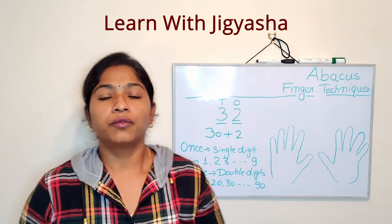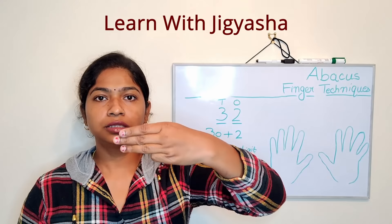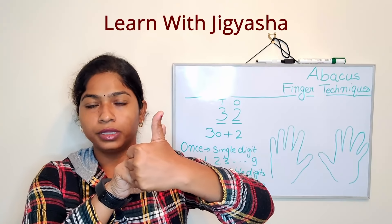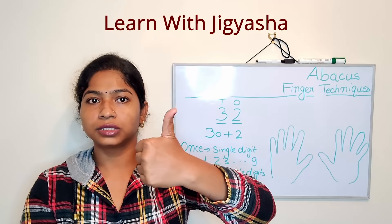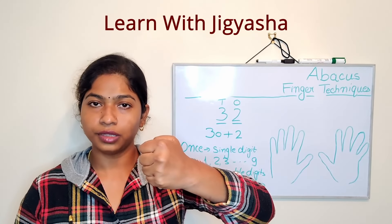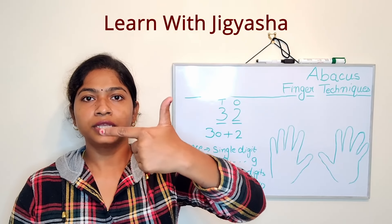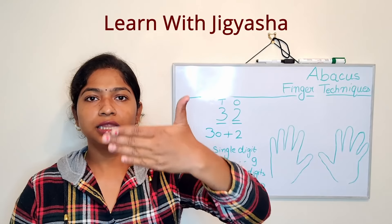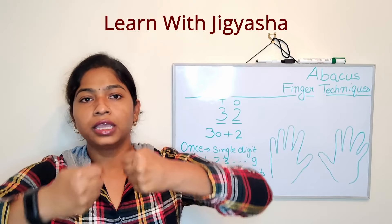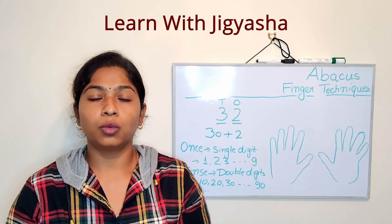When we represent tens digits — 10, 20, 30, up to 90 — we represent them on the left hand. So: 10, 20, 30, 40, 50. For 50, I close my fingers and only the thumb remains open. Then 60, 70, 80, 90, and 0. Whenever I make a fist with either hand it represents 0, and making a fist with both hands is also 0.